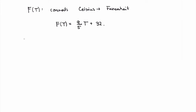What is the inverse function in this case? The inverse function, which we denote as F⁻¹ of T — minus 1 does not mean reciprocal here, it means inverse function — will do the exact inverse process. It will start with taking a temperature in Fahrenheit degrees and converting it into a temperature in Celsius degrees.